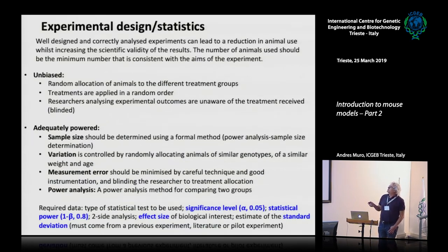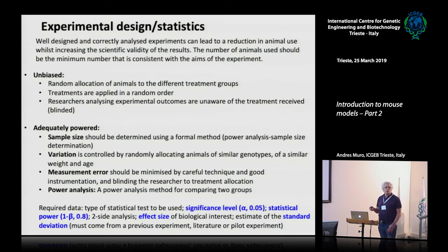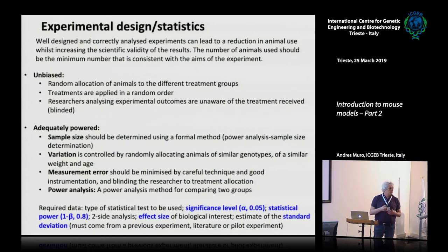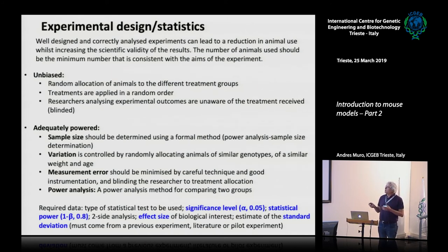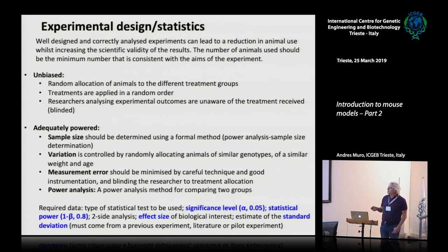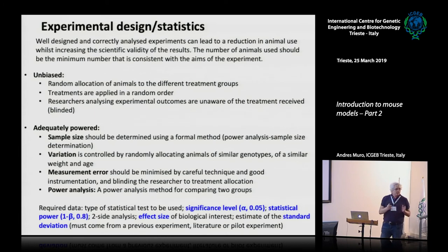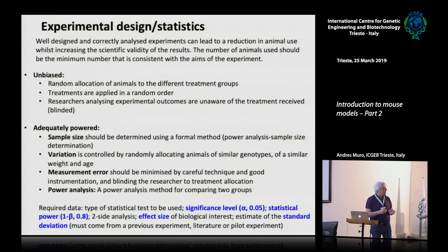A good experimental design should be unbiased. If possible, we should randomly allocate animals. The experimenter should not know, at the moment of treatment or analysis, whether the animal has been treated or is the control — the person should be blind to the treatment if possible. You should also power the experiment to get statistically significant results with the necessary number of animals. Too few animals and you won't get significance; too many and you waste resources.